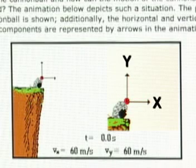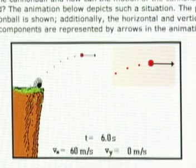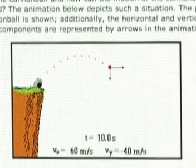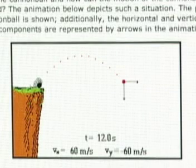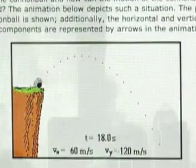The Y-component represents up and down, and the X-axis represents left and right. At the start, they are equal. At the top of the arc, the Y-value is zero. As the cannonball falls to the original level of the cannon, its speed increases to its original value of 60 meters per second, yet the X-value remains the same throughout the flight of the cannonball.